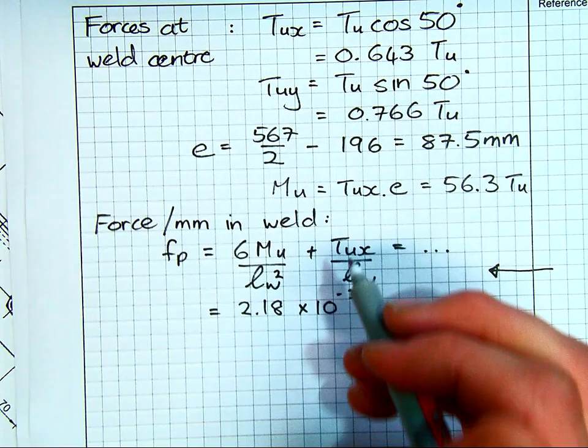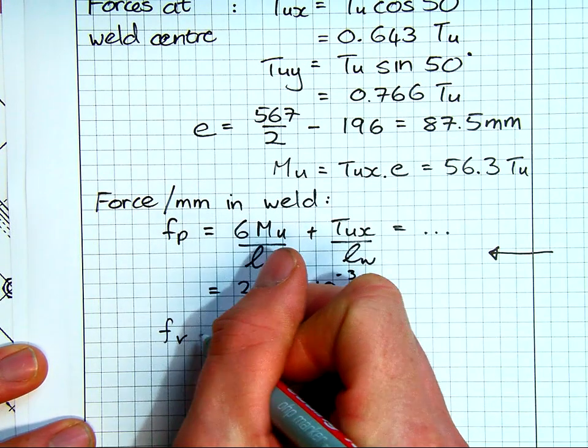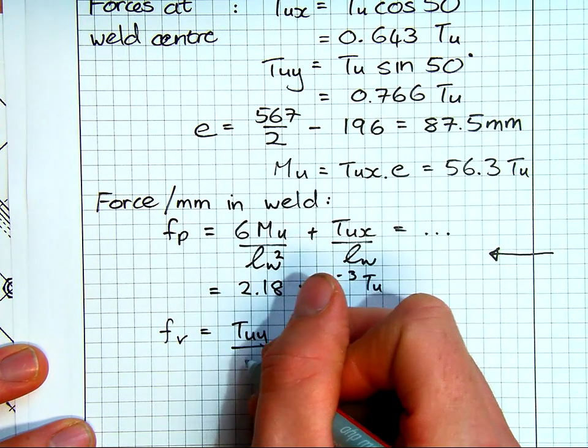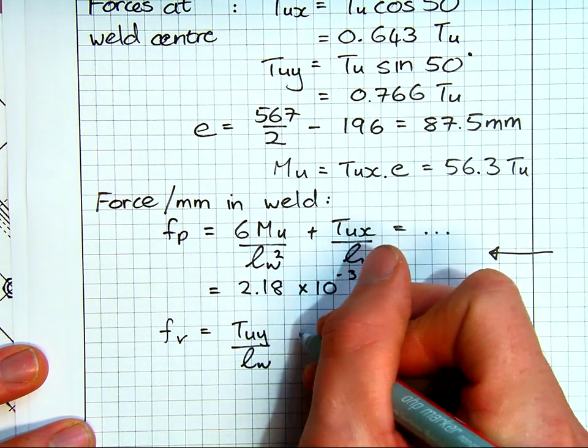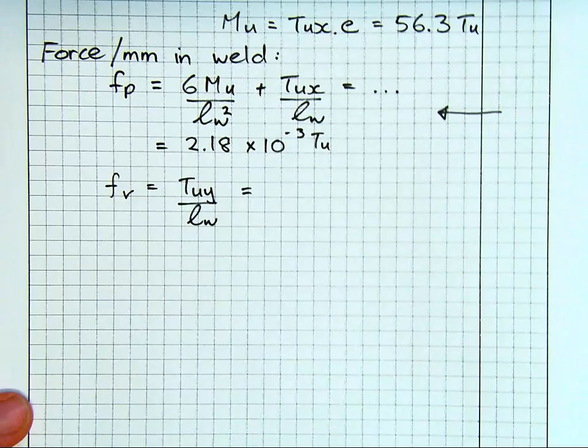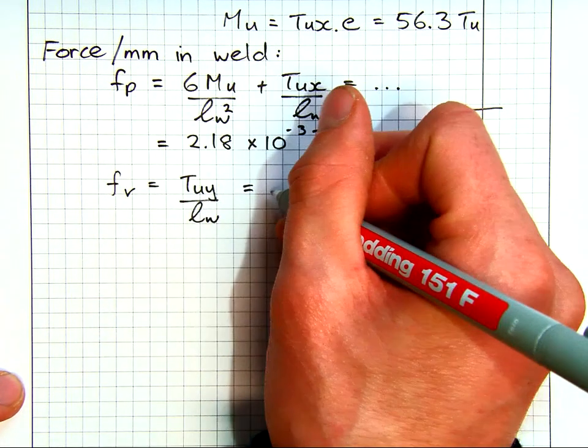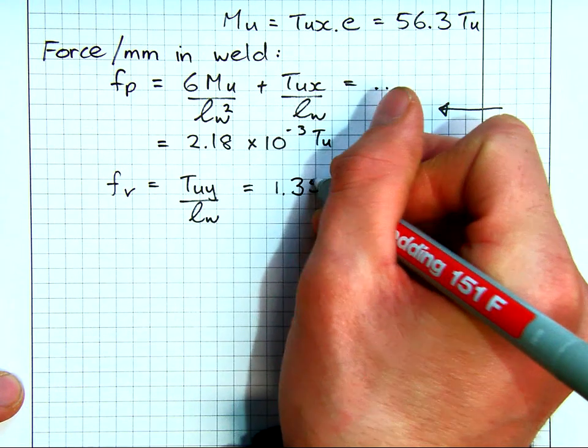Then, we're going to get a shear component and this is simply due to Tu_y divided by the length of weld. And at this stage I'm dealing with both sides of the weld. So be careful, either you can divide your loads and then design one side and the other. I'm actually doing both sides together. Either way is possible.